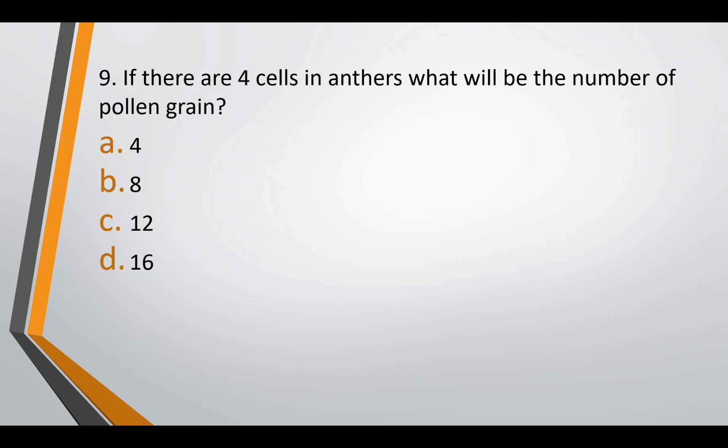Question nine: if there are four cells in an anther, what will be the number of pollen grains — option A: 4, option B: 8, option C: 12, or option D: 16? The correct answer is option D — 16. Remember, each cell can give rise to a tetrad of pollens. So four cells will give 4 × 4, that is 16 pollen grains.